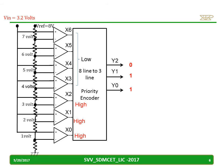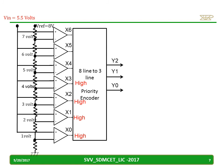Similarly, if the input applied is 5.5 volts, the op-amp outputs X0, X1, X2, and X3 will be high, while the remaining X4 and above will be low. Hence, the output of the priority encoder will be 1, 0, 1.